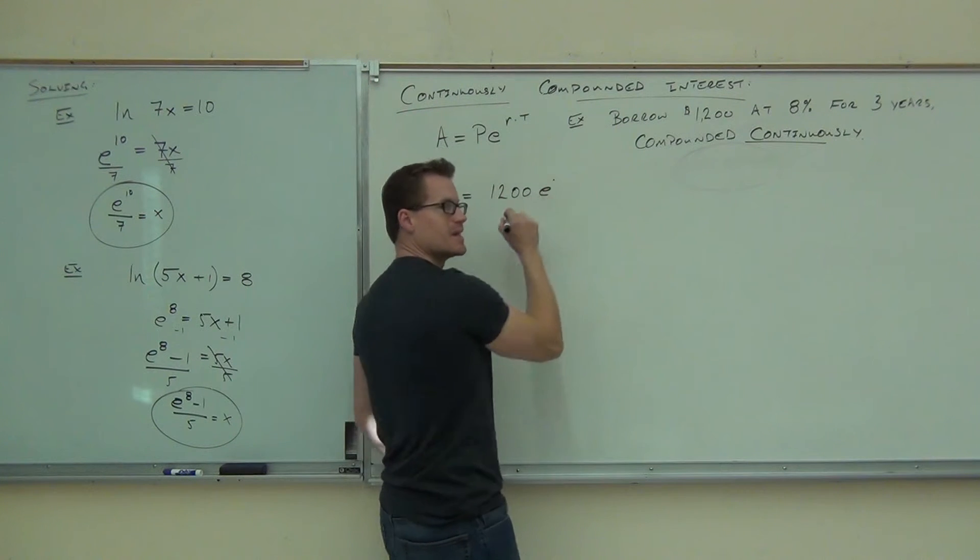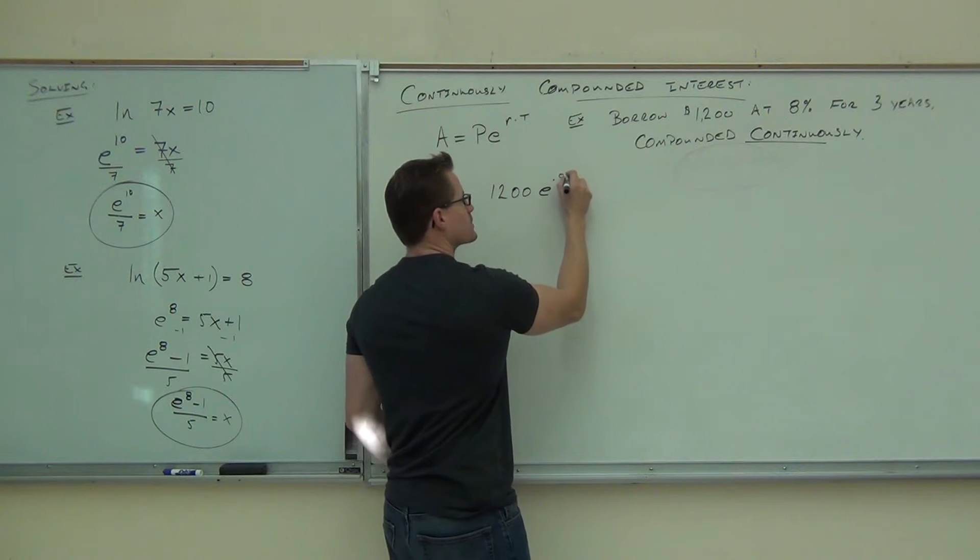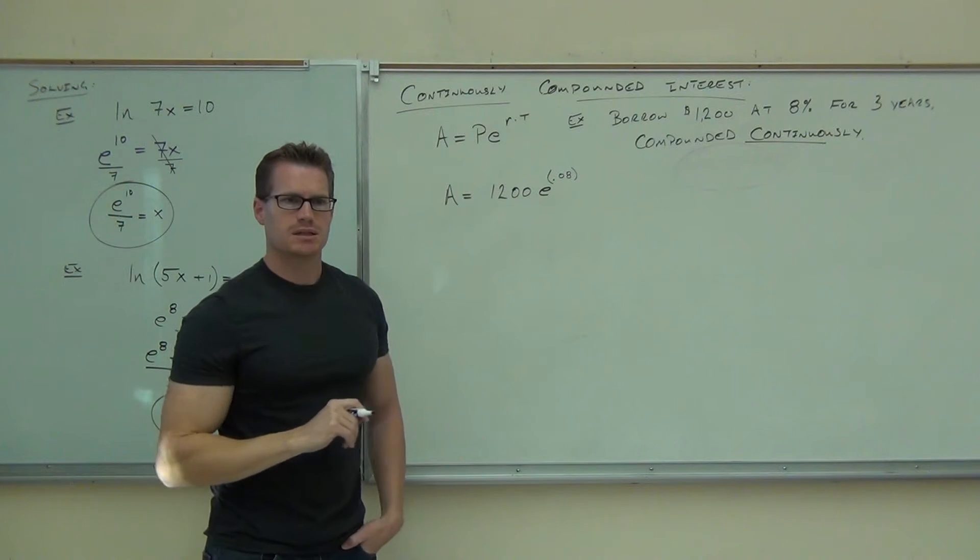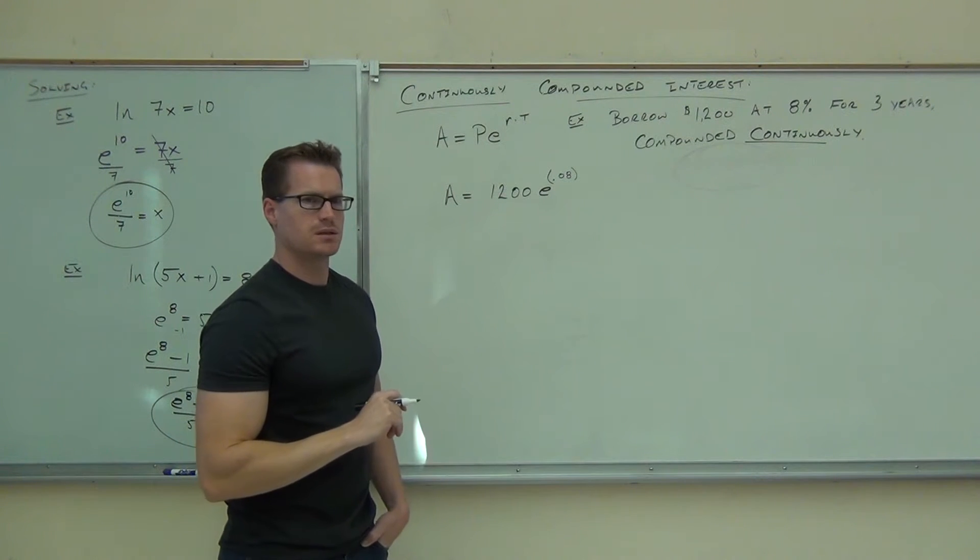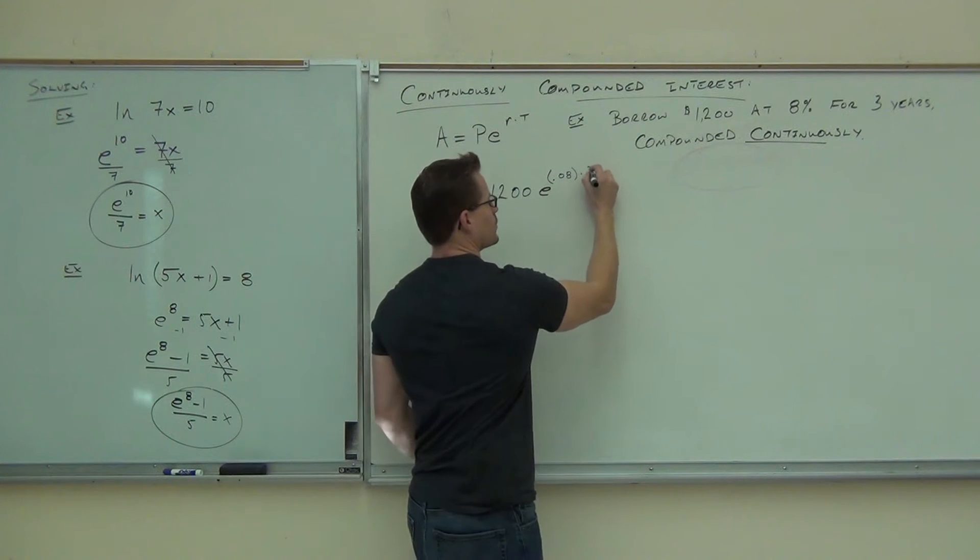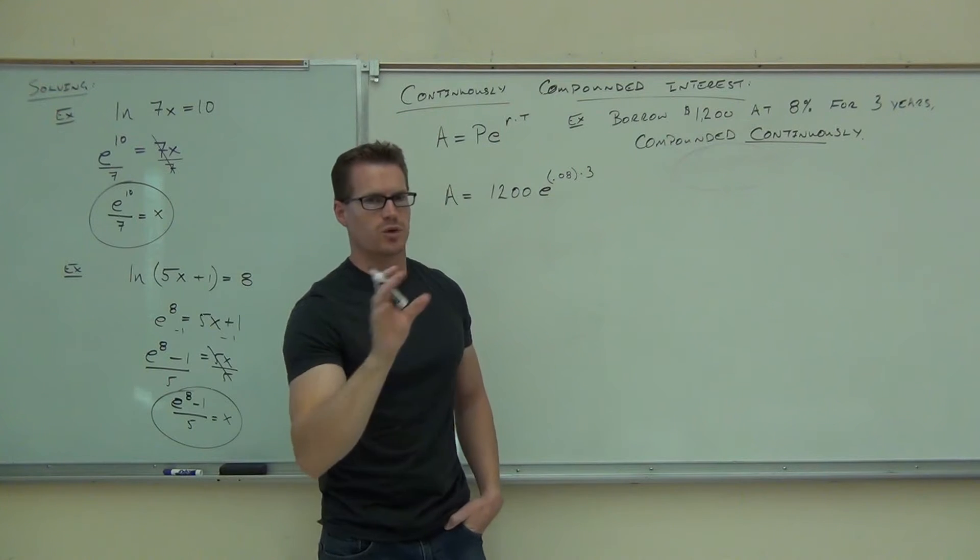So up here, remember, it's in the exponent spot. You do .08. And T? Three. Three years. And that's being multiplied, just like it was in the last formula. You multiply the exponent.